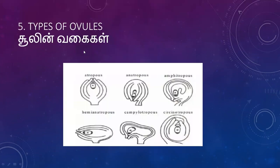Then types of ovules: the atropous ovule is a straight ovule. The anatropous ovule is inverted. The hemianatropous ovule is half-inverted. The campylotropous and acinotropous types are also identified. Hemianatropous is called the half-bent ovule.